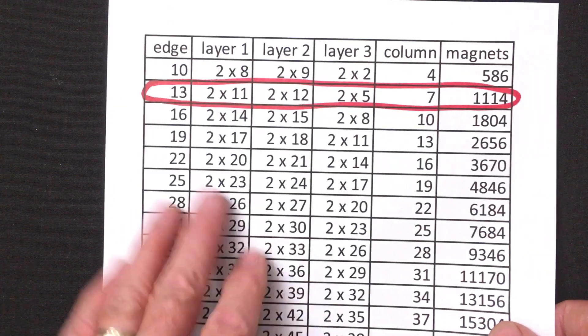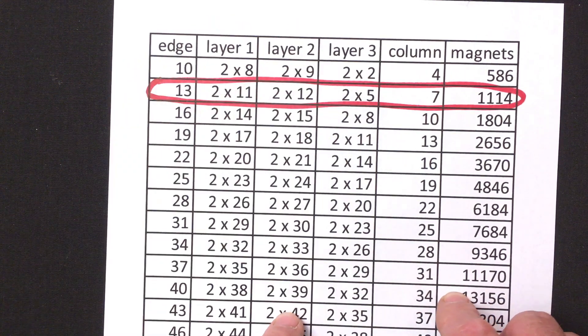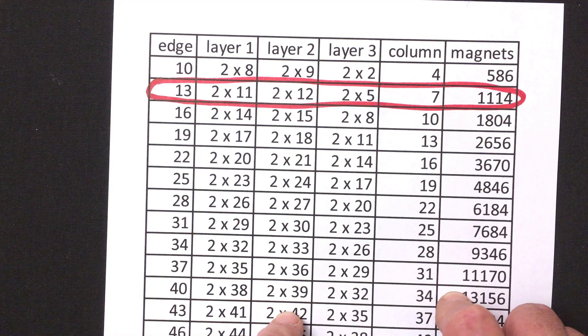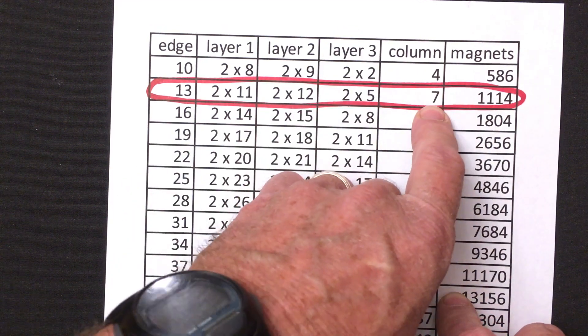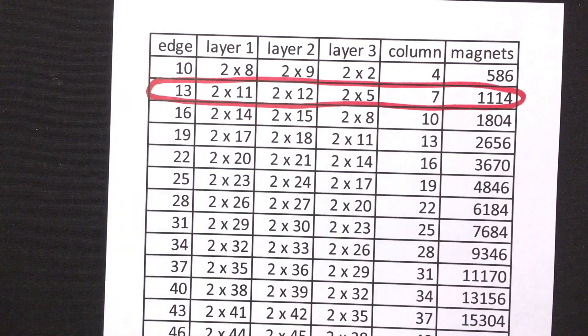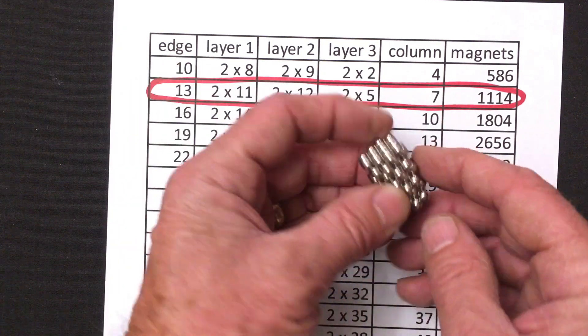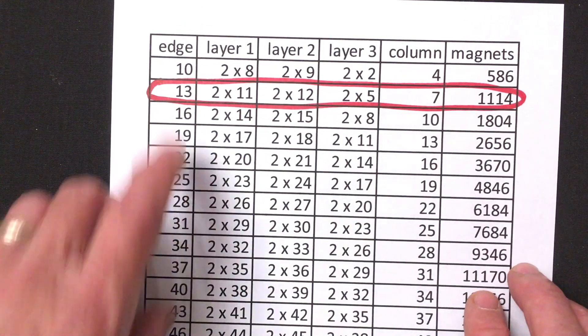So again, if you're going to build it in other sizes, remember that layer one starts with a filled hexagon, layer two starts with a three-ring triangle, layer three starts with a filled hexagon, and the number of columns are these two by three stacked columns. This gives the number of those that you need, the total number of magnets, and the edge count.